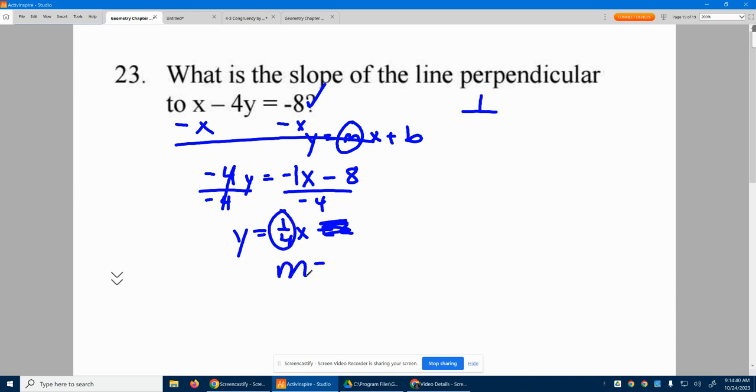Here, this guy has a slope of 1 fourth. That's what we have, a slope of 1 fourth.